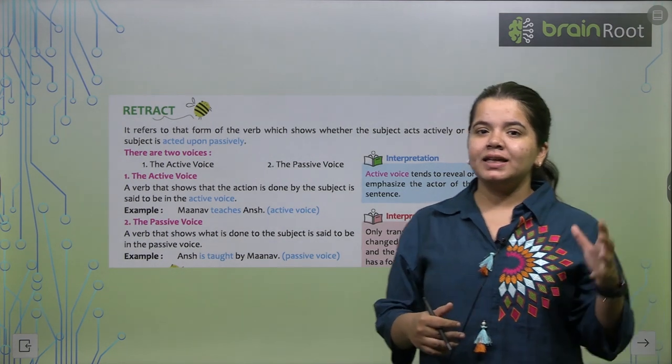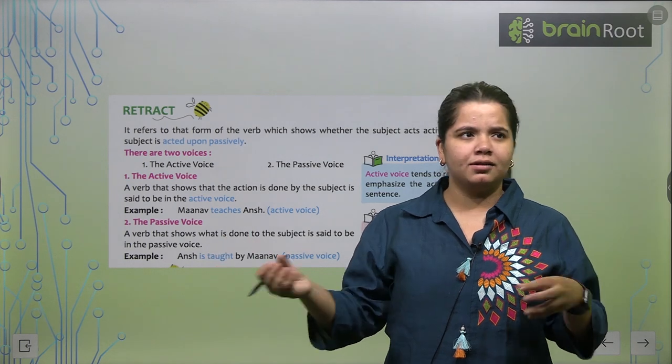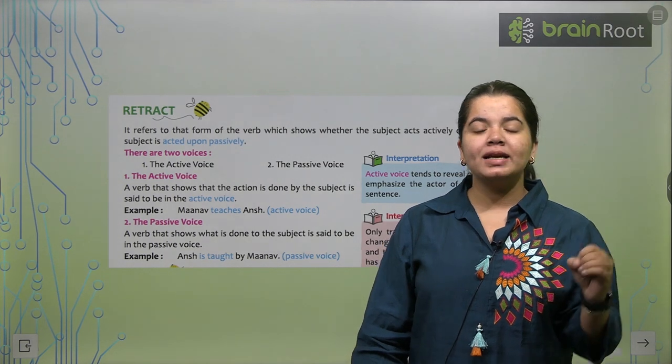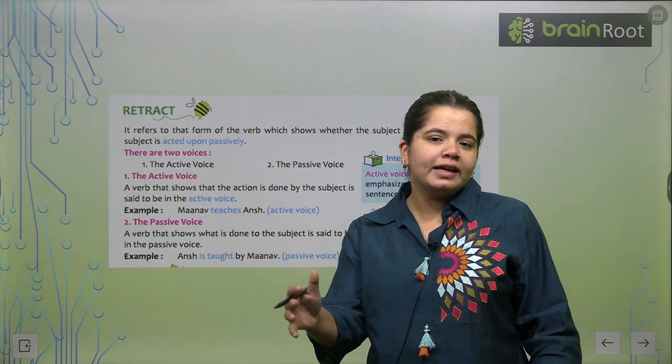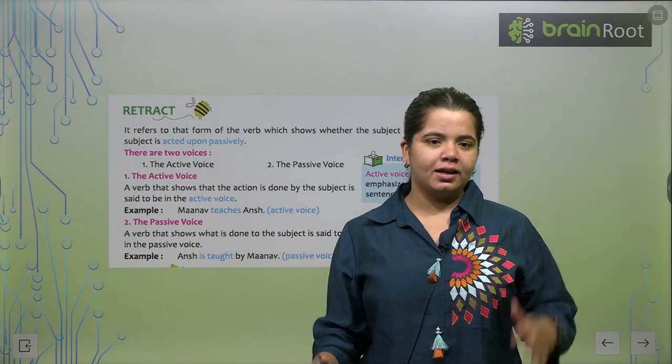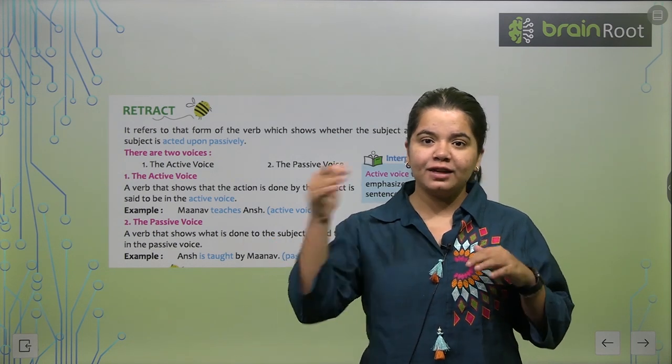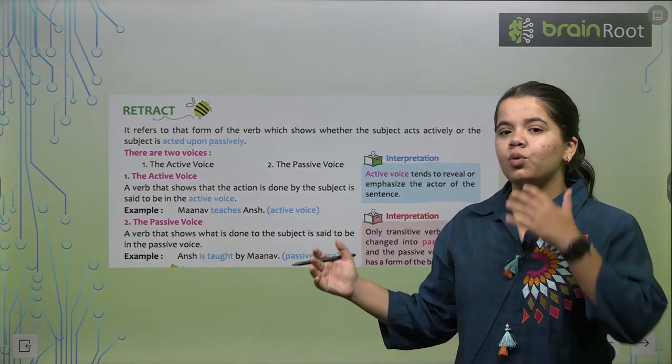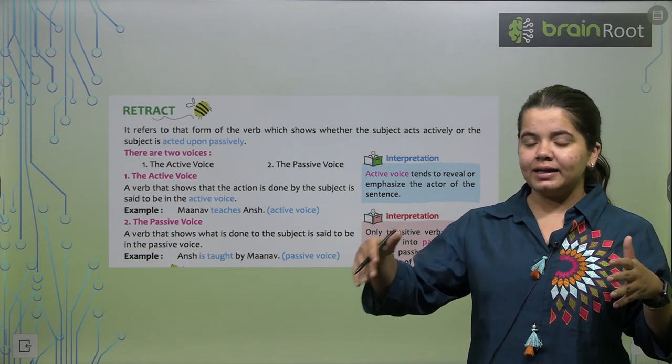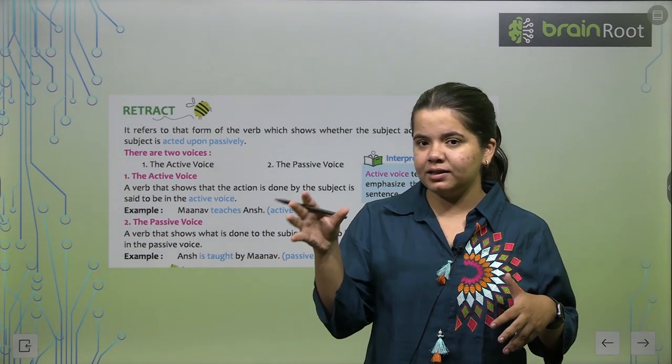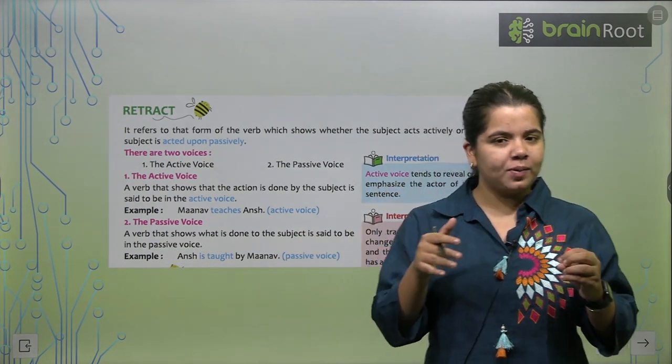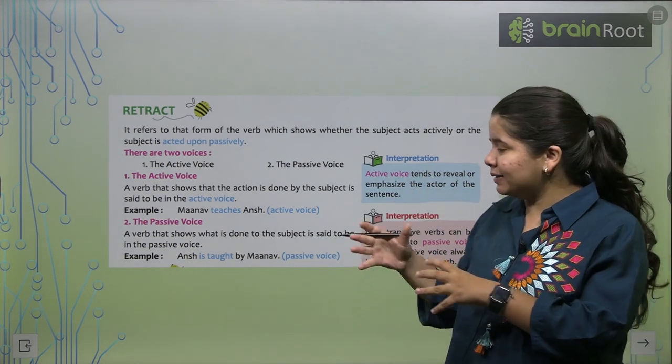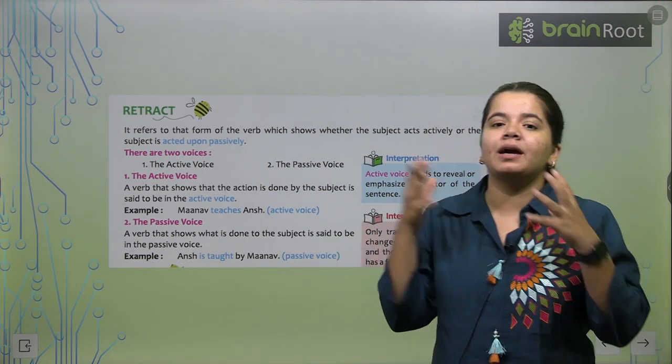For example, the police caught the thief. This came in our active voice. The police caught the thief. But if I have to say this in passive voice, how will I say it? The thief was caught by the police. So what did we do? To tell about the subject, we didn't tell it directly, but told it by making something a medium.